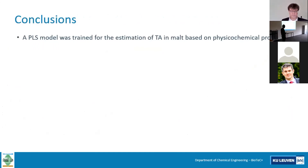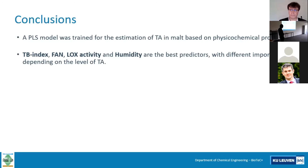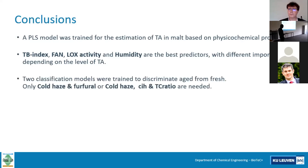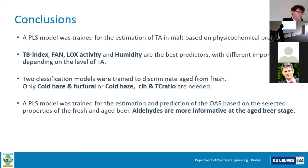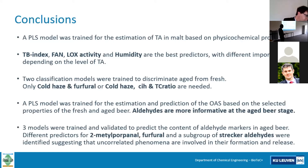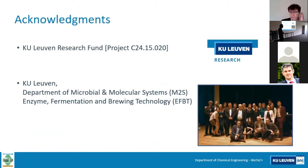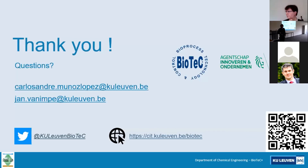So just to conclude: we trained a PLS model to estimate total aldehydes in malt based on physical-chemical properties, identifying four main predictors whose contribution depends on the actual level of aldehydes. We built two classification models to discriminate aged and fresh beer and identified the main predictors. We trained a PLS model for prediction of the overall aging score, and also predictive models for methylpropanal, furfural, and Strecker aldehydes. This project was funded by KU Leuven Research and was a collaboration with the laboratory of enzyme fermentation and brewing here at the campus. Thank you very much — happy to answer any questions.